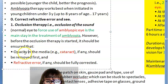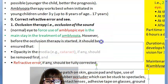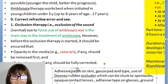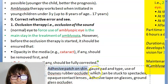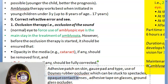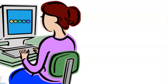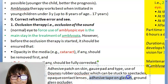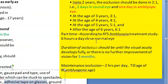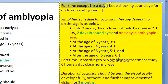How to perform occlusion: you can put an adhesive patch on the skin, a gauze pad, Doyne's rubber occluder stuck to the spectacles, an opaque contact lens on the sound eye, adhesive tape on the spectacle glass, or a ground glass occluder. The occlusion can be full-time — except one hour a day — but you must keep checking the sound eye for occlusion amblyopia, so the good eye does not become lazy.